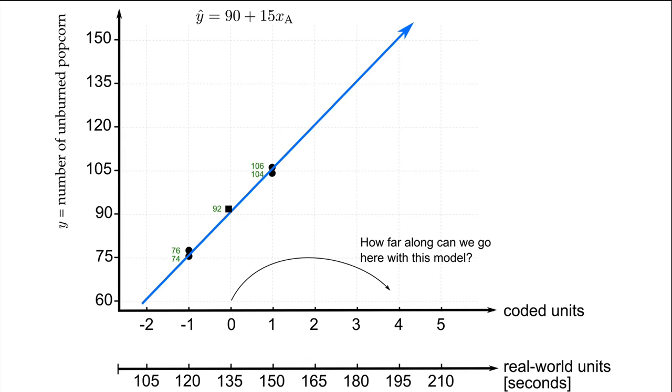If we want the maximum number of white unburnt popcorn, we should be going to the right, using longer and longer cooking times. But how big of a step should we take? We will never really know until we try. I usually start by making a one coded unit change away from the baseline. So from xA equals 0 to xA equals 1, but we've already ran that experiment. So let's jump another unit up to xA equals plus 2. In real world units, you showed a few minutes ago that that new point corresponds to 165 seconds. Now, before you are tempted to run your experiment, it is a great idea and good practice to make a prediction first. Use your model and show that the prediction is going to be 90 plus 15 times 2, which equals 120.